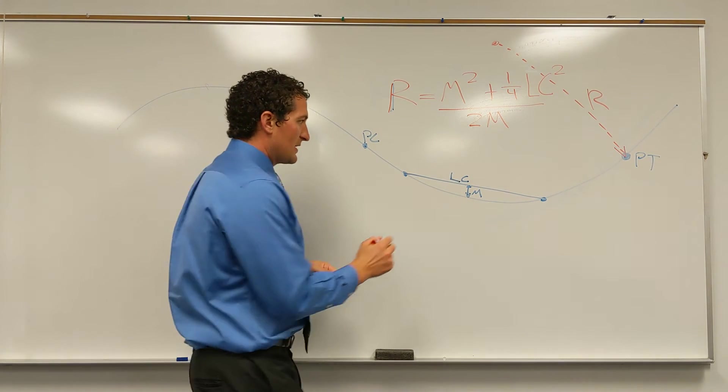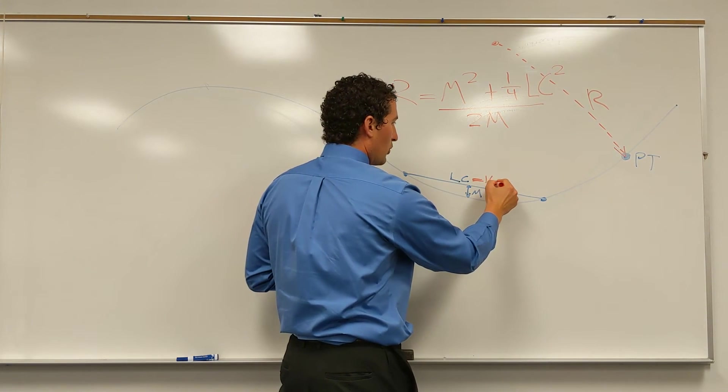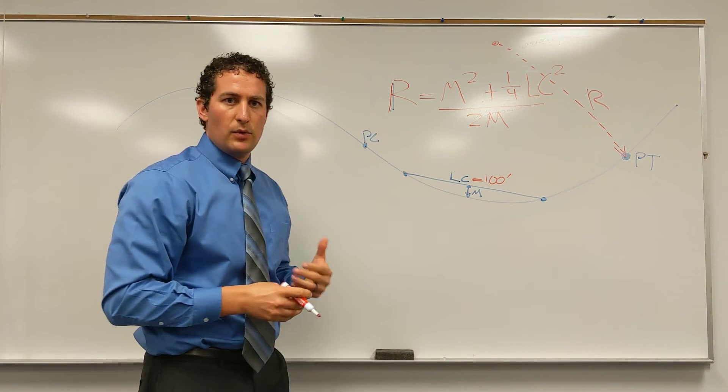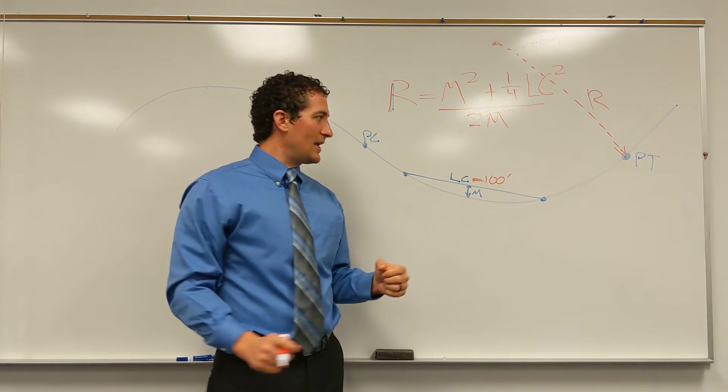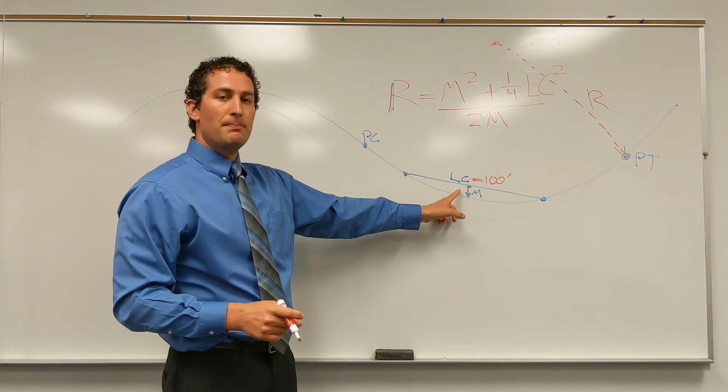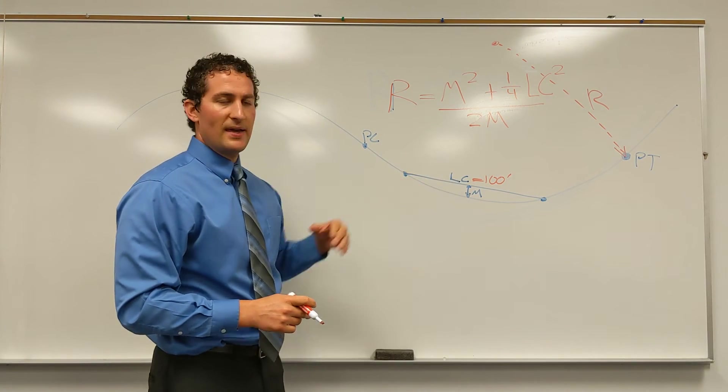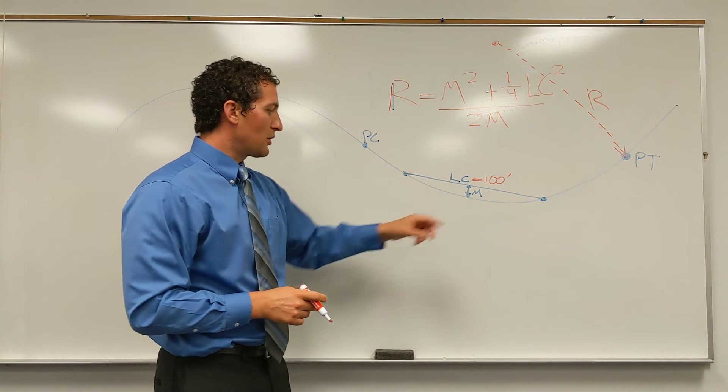Putting in some example values here, if we had a long chord of 100 feet, so if we're measuring, you could measure this in the field as well along the center of the road, take a measuring tape of 100 feet, and then at the midpoint, measure the distance from that straight line to the curve itself.